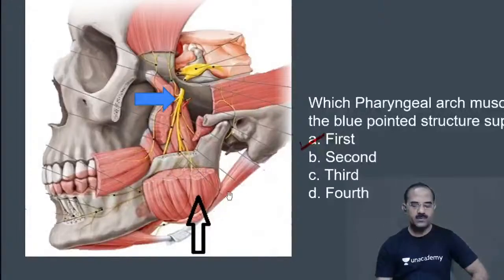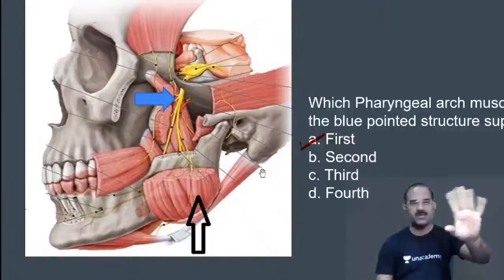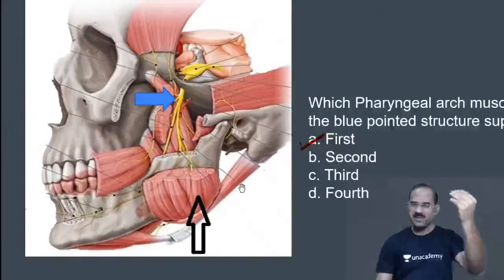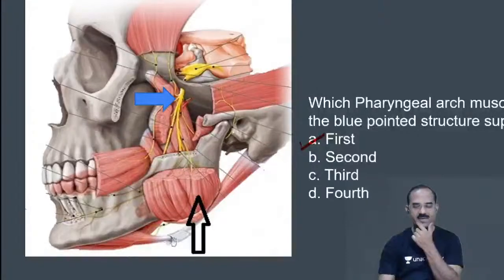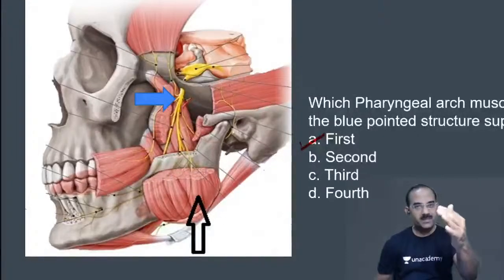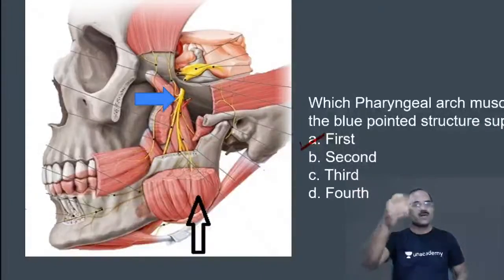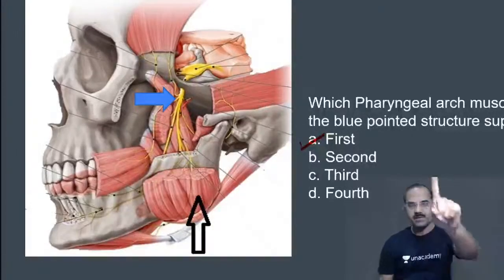What is this other muscle in the slide? That's the posterior belly of digastric. And this is the anterior belly of digastric. The posterior belly of digastric is supplied by the facial nerve because it is derived from the second pharyngeal arch. The anterior belly of digastric is supplied by the mandibular nerve because it is derived from the first arch.